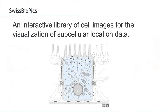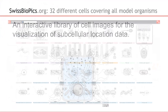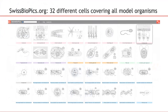SwissBioPix is a freely available library of interactive biological images for visualization of subcellular location data. It covers all cell types for kingdoms of life, ranging from muscle, neuronal, and epithelial cells of animals.